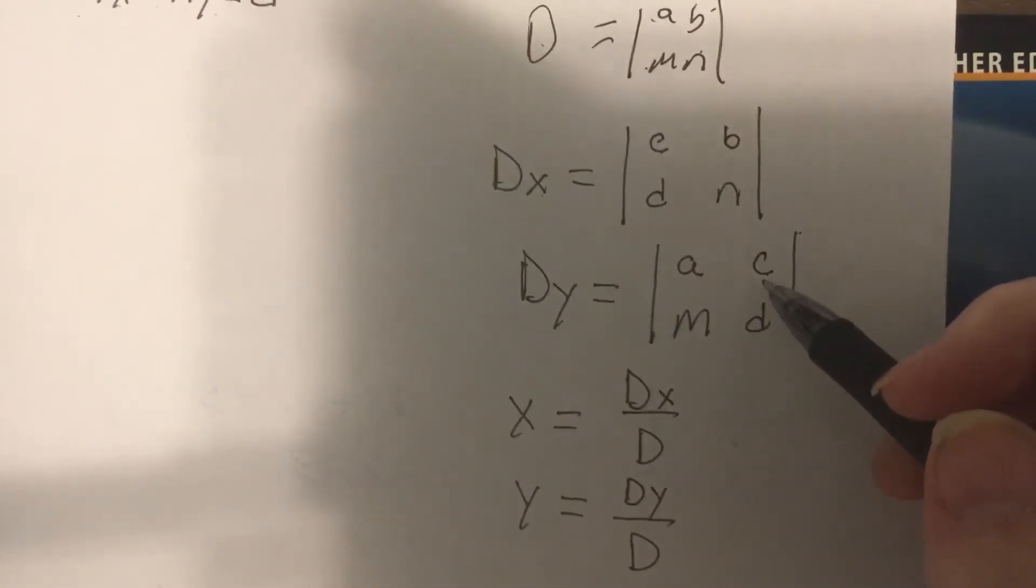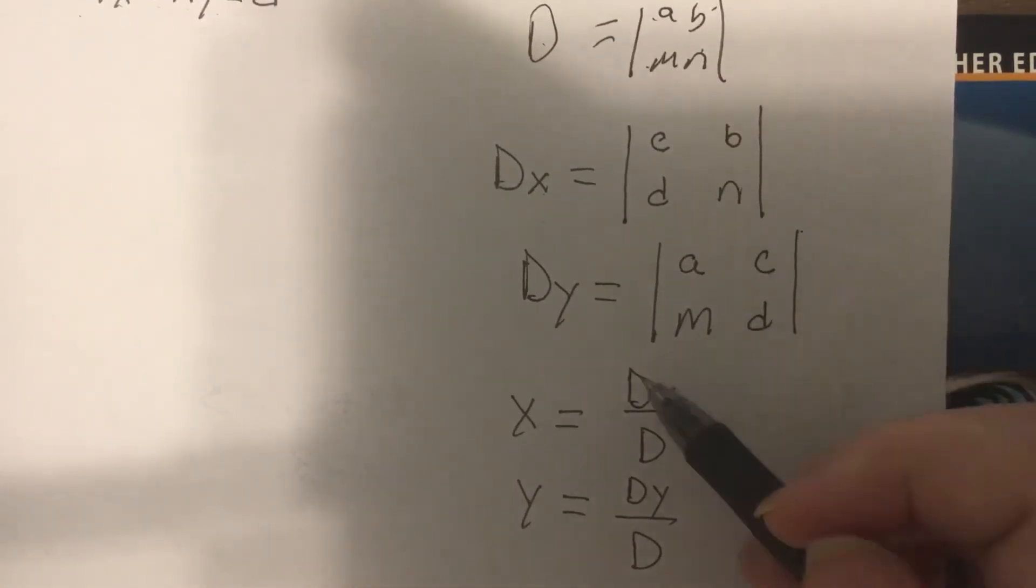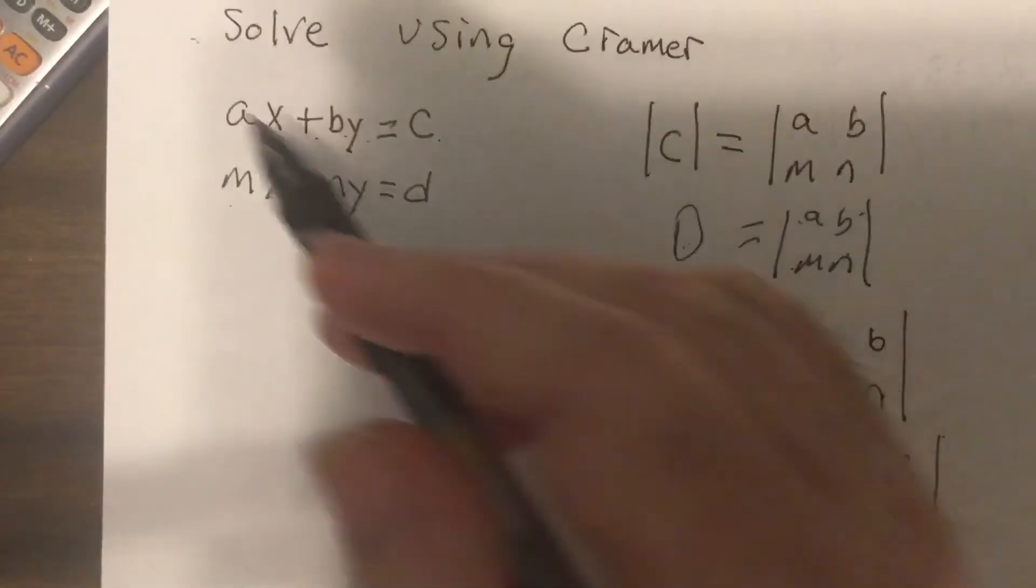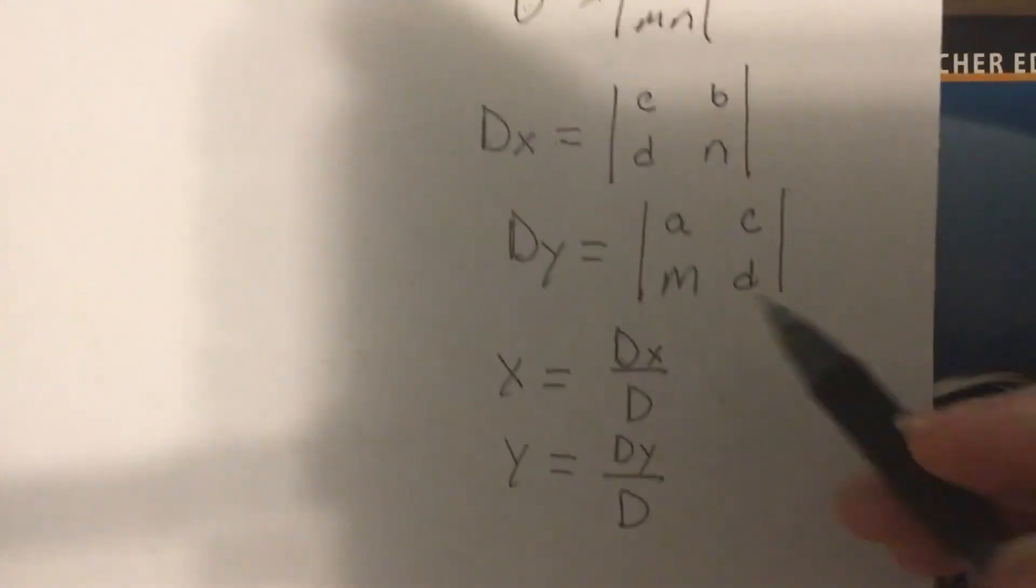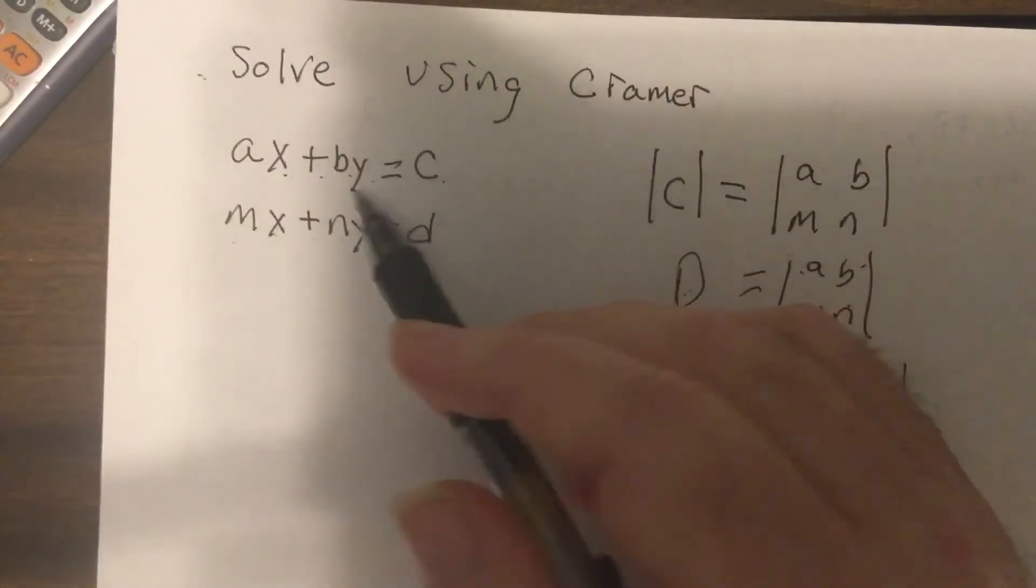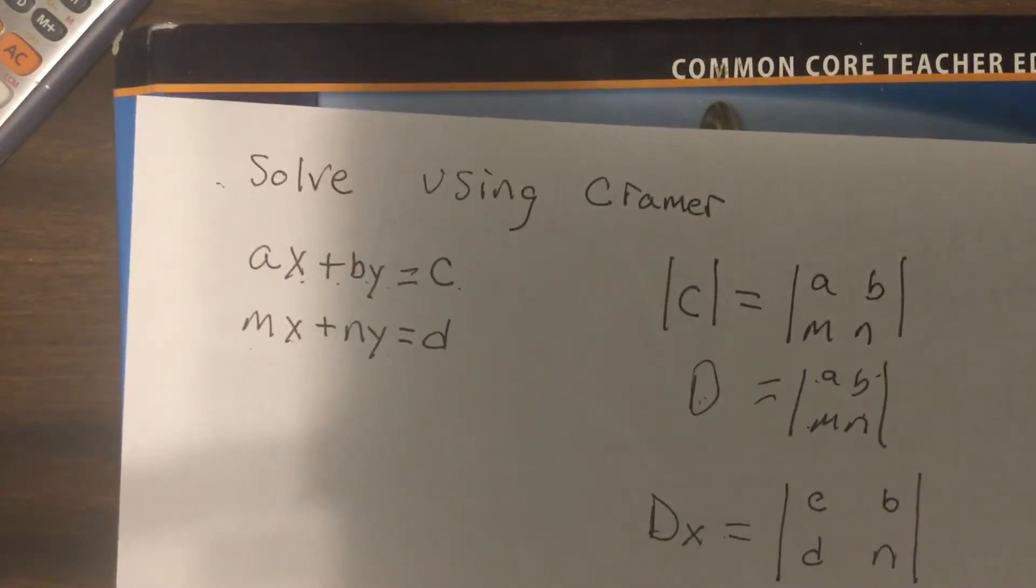And what Kramer discovered was that DX divided by D will give you the answer for X. DY divided by D will give you the answer for Y. So let's look at a problem.